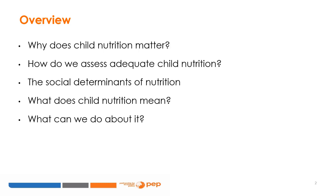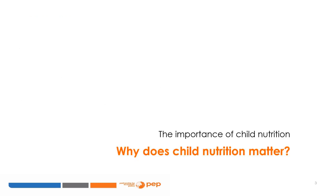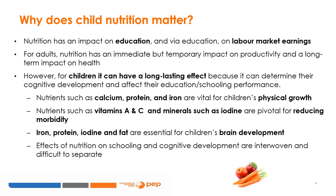We will start this lecture with the first bullet, asking why child nutrition matters. The most important pathway for nutrition is via its impact on education and, via education, its impact on labour market earnings. For adults, nutrition has an immediate but temporary impact on productivity and a long-term impact on health. However, for children, it can have long-lasting effects because it can affect their cognitive development and schooling performance.